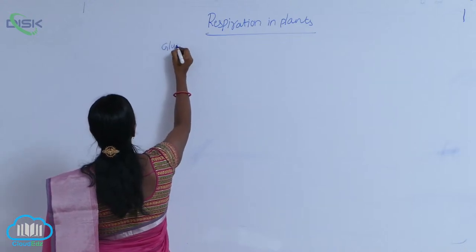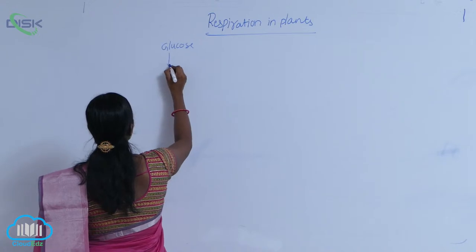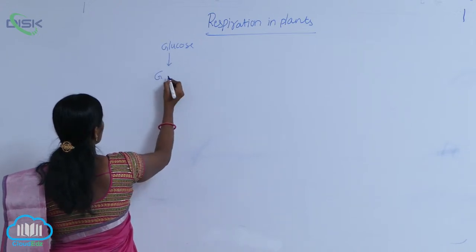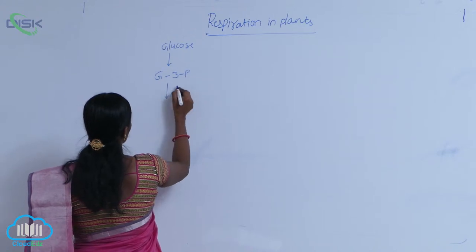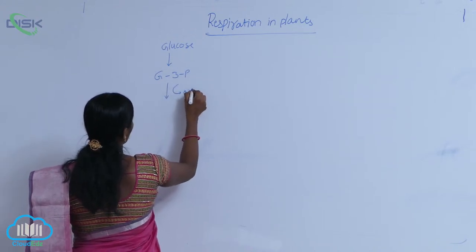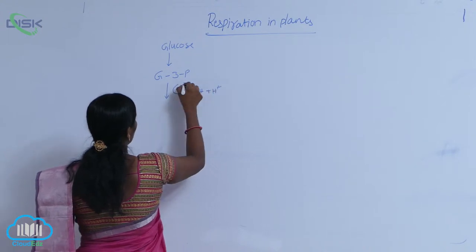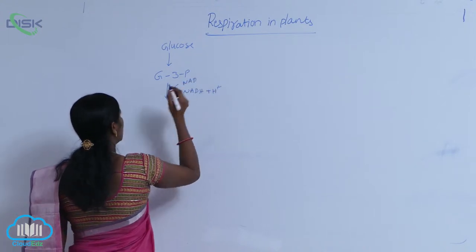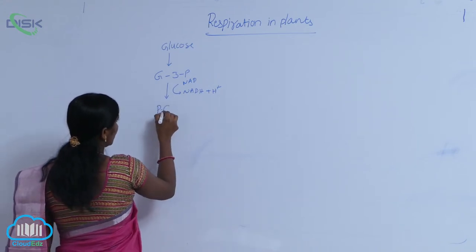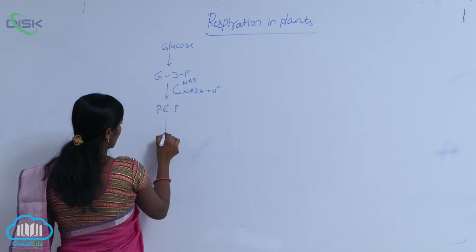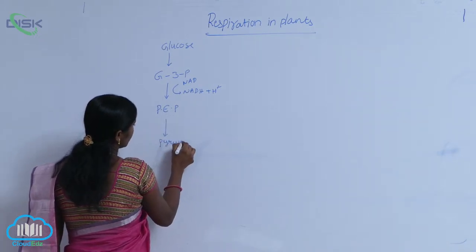Glucose can form as glucose glyceraldehyde-3-phosphate. There is a production of NADH+ and it turns into PEP, phosphoenol pyruvic acid, and then turns into pyruvic acid.